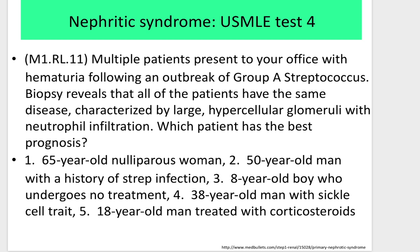Test 4: Multiple patients present with hematuria following an outbreak of streptococcus. Biopsy reveals all patients have the same disease characterized by large hypercellular glomeruli with neutrophil infiltration. Which patient has the best prognosis? (1) A 65-year-old newly parous woman, (2) A 50-year-old man with a history of strep infection, (3) An 8-year-old boy who undergoes no treatment, (4) A 38-year-old man with sickle cell trait, (5) An 18-year-old man treated with corticosteroids.